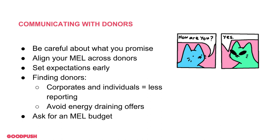Third, set expectations early. If you're a smaller grassroots organization, you have very limited time and resources and you need to communicate this with donors. When looking for donors, be thoughtful about whether what you're getting out of it is worth their expectations. Good donors will recognize you only have so much capacity — they won't give you a grant for $1,000 and expect you to spend several hours every week on MEL. Businesses, corporates, and individuals will generally be less time-consuming in terms of MEL reporting. Avoid energy-draining offers if you can.